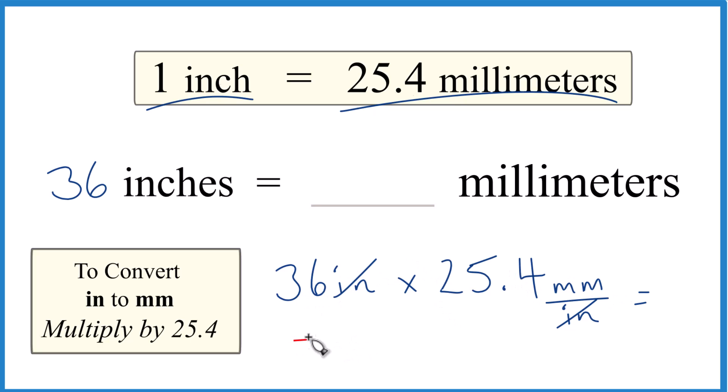So we multiply and we get 914.4 millimeters. So in answer to our question, 36 inches equals 914.4 millimeters. This is Dr. B, and thanks for watching.